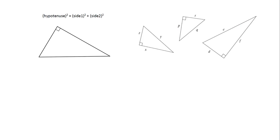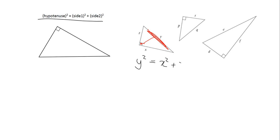Let's check that we have the theorem of Pythagoras straight for some other cases. Let's have a look at these three triangles here and write down what the theorem of Pythagoras tells us for each. Before we can apply the theorem, we always need to check: are we in a right-angled triangle? Yes. Then we identify the hypotenuse — the one opposite the right angle. So Pythagoras tells us y squared is equal to x squared plus z squared.